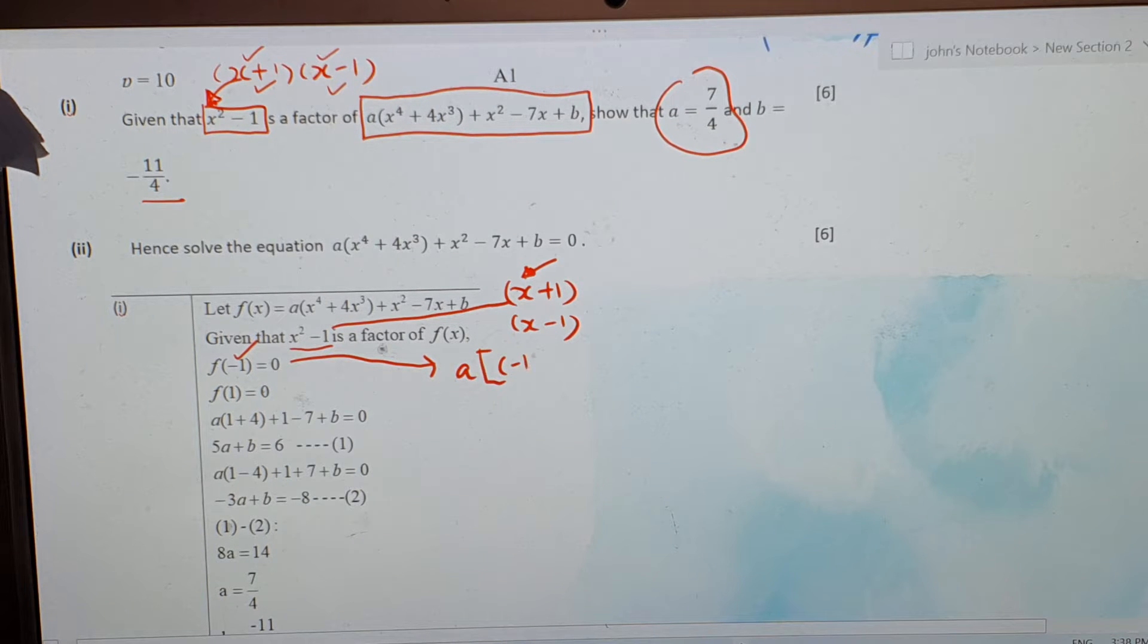You sub minus 1 inside here. Replace all the x with minus 1. And remember when you do that, please put your brackets. That will give you, this is minus 3, you can press calculator, minus 3, then this will give me 7, 8. So when you simplify, you will get this.